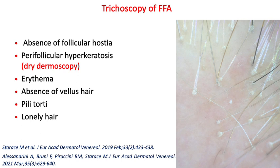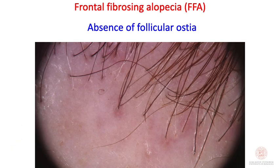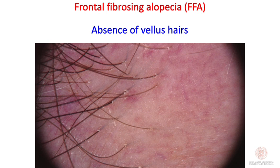As you can see in these pictures, perifollicular hyperkeratosis appears all around the emergence of the follicular unit. This is an example of absence of follicular ostia — you can see the typical terminal hair and the direct absence of the normal follicular attachment, with no vellus or intermediate hair. Another aspect shows the sign of erythema.